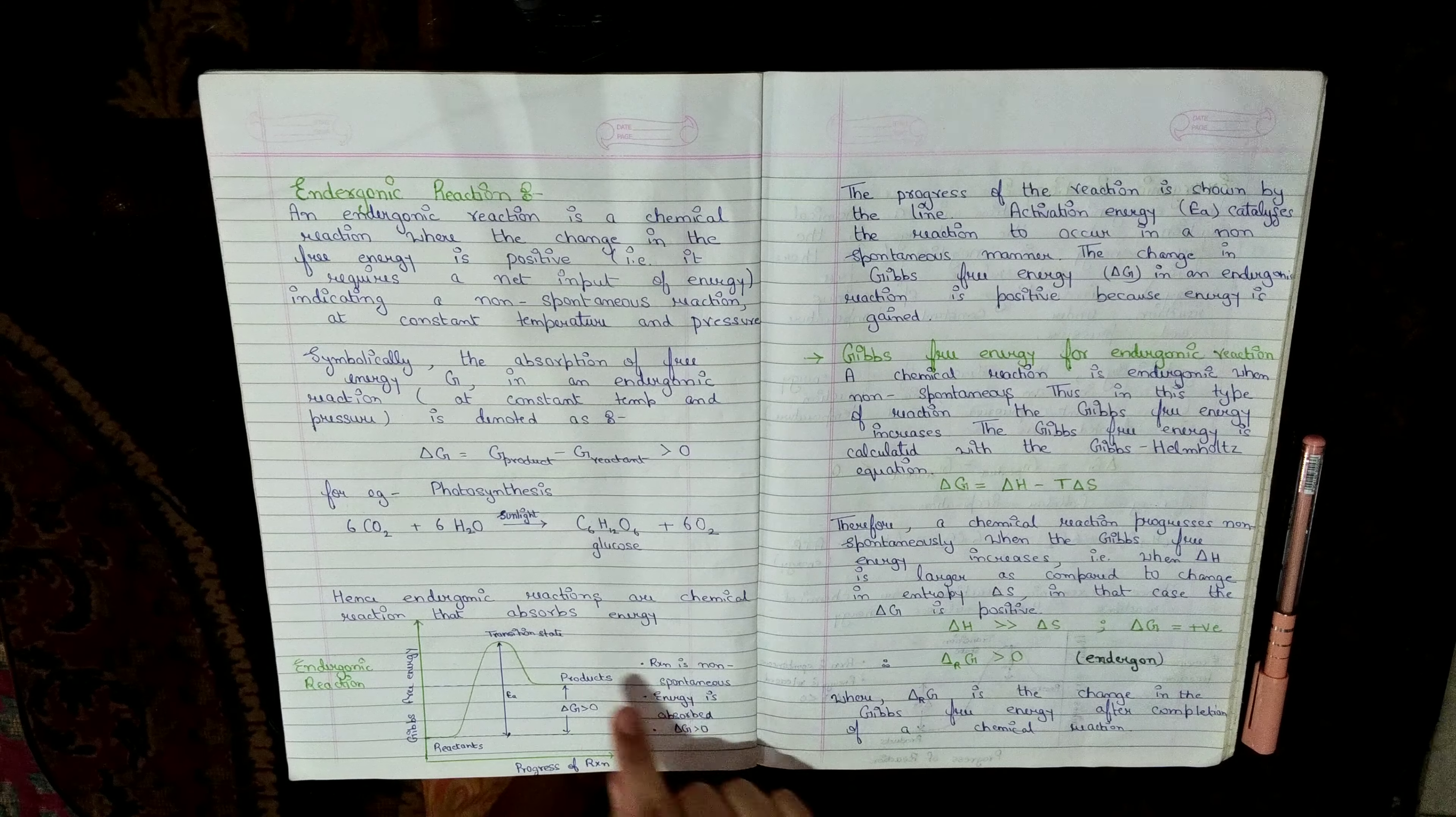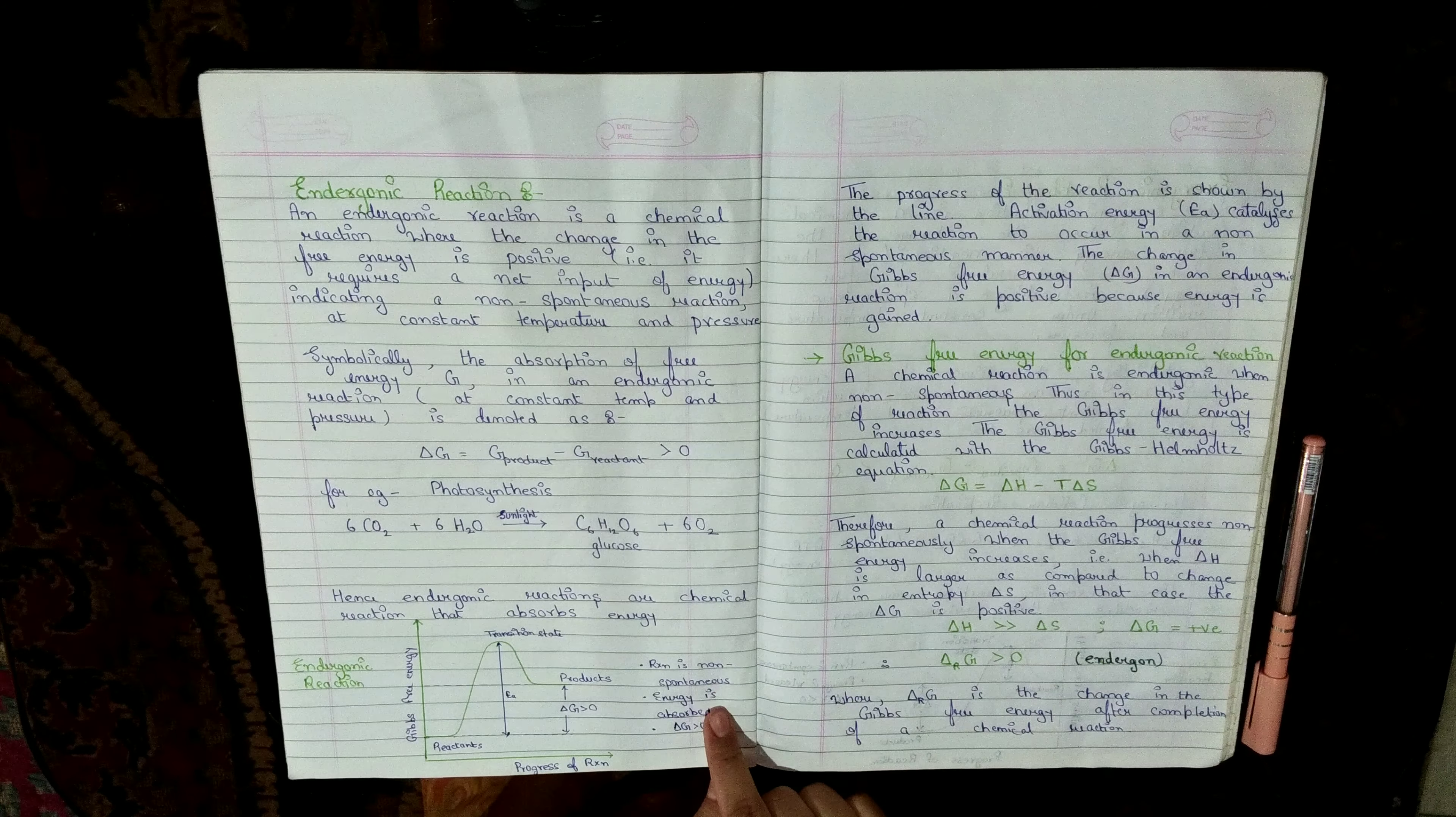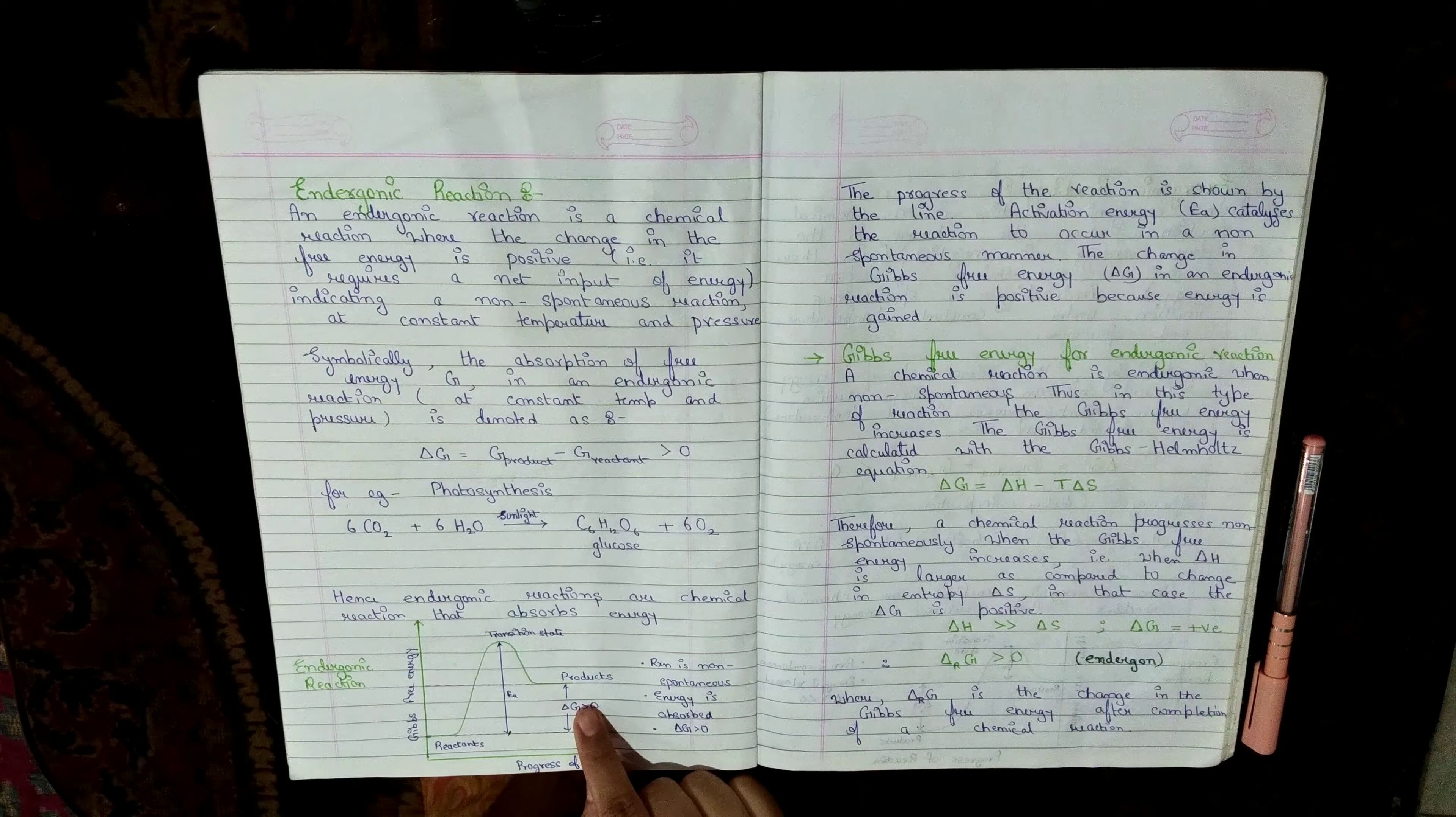Endogonic reactions are non-spontaneous. Therefore, product formation is not favored. Energy is absorbed, meaning delta G will be greater than zero.